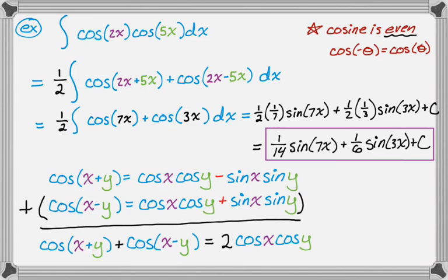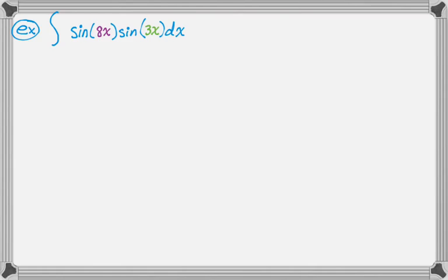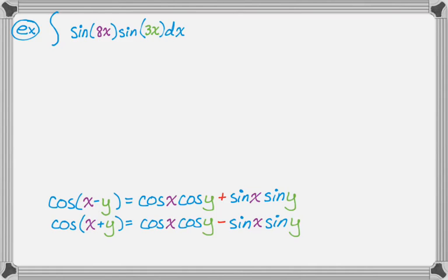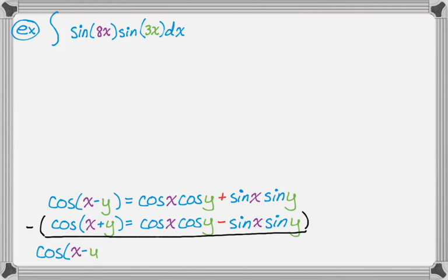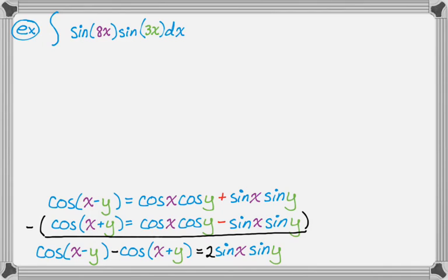Now let's look at sine times sine — same basic idea. To get sine times sine, I use the two cosine formulas, but this time I subtract them instead of adding. Cosine of x minus y minus cosine of x plus y gives 2 sine x sine y, because the cosine x cosine y terms cancel and the sine terms combine.